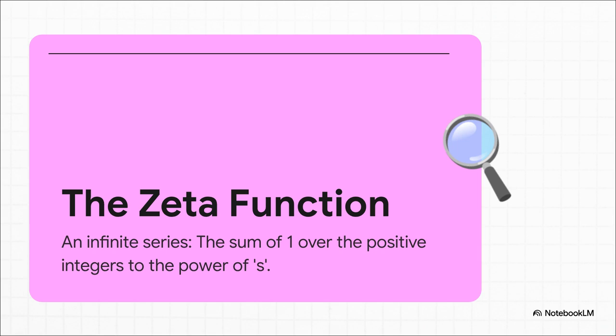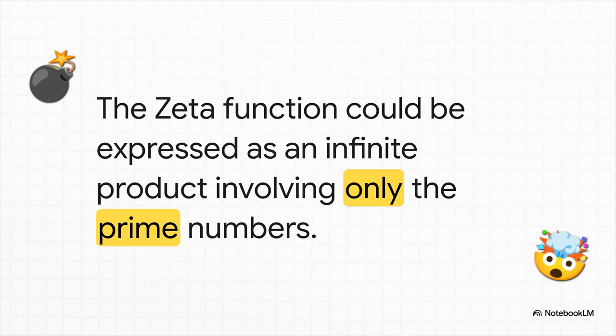And then, Euler discovered something that blew everyone's mind. He found that this zeta function, this thing built from all the whole numbers, could be rewritten in a totally different way, as a product that used only the prime numbers. This was a bombshell. It was like he'd found a secret bridge connecting the entire world of integers to the exclusive, chaotic world of the primes.